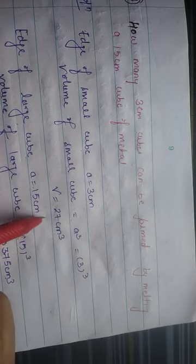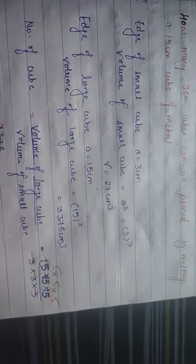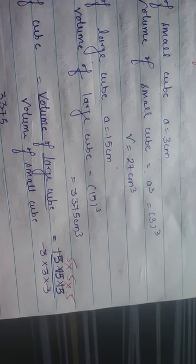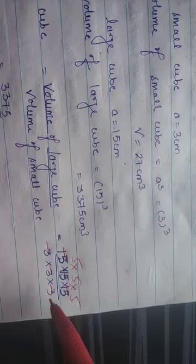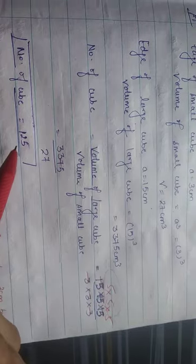Next question: How many 3 cm cubes can be formed by melting a 15 cm cube of metal? Edge of small cube = 3 cm, volume = 3³ = 27 cm³. Edge of large cube = 15 cm, volume = 15³ = 3375 cm³. Number of small cubes = volume of large cube ÷ volume of small cube = (15 × 15 × 15) ÷ (3 × 3 × 3) = 5 × 5 × 5 = 125.